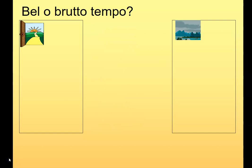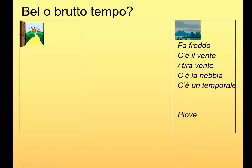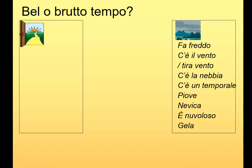Va bene le risposte. Fa bello o fa brutto tempo? What you'll find is that the majority of the phrases are bad weather. Generally: fa freddo, c'è il vento, c'è la nebbia, c'è un temporale, piove, nevica, è nuvoloso, and giella — all considered bad weather.